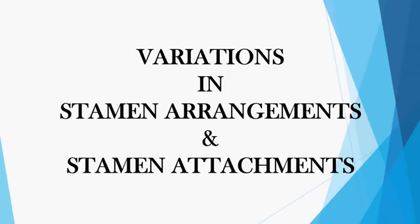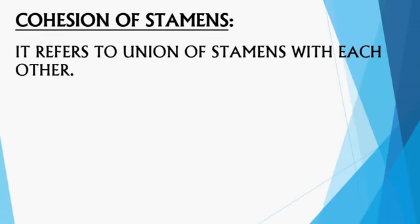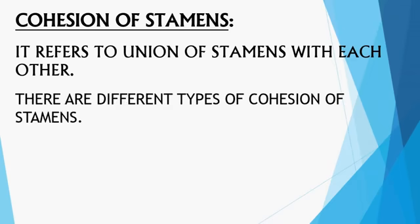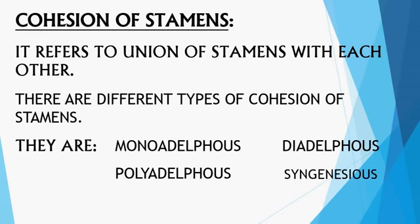The first variation is cohesion of stamens. It refers to the union of stamens with each other. There are different types of cohesion of stamens: monoadelphous, diadelphous, polyadelphous, syngenesious, and synandrous.